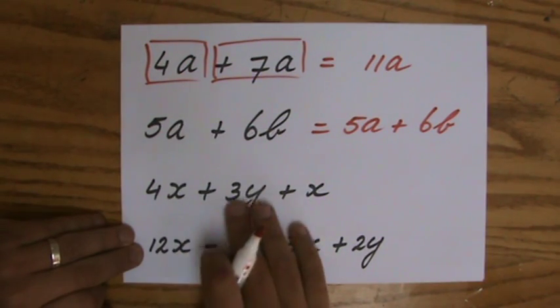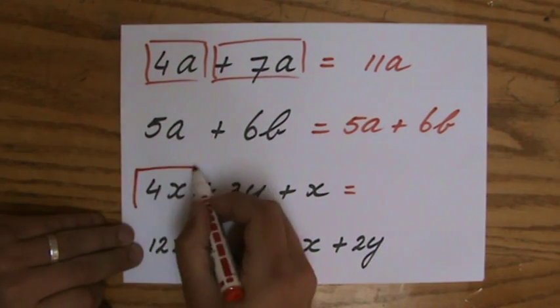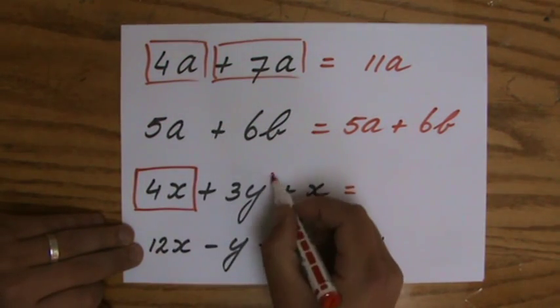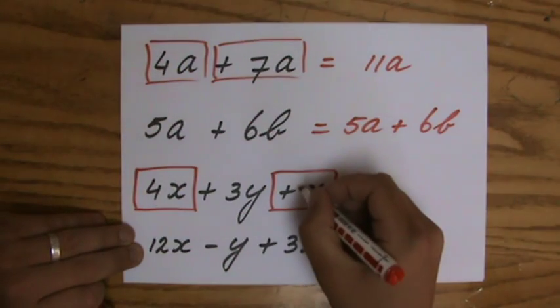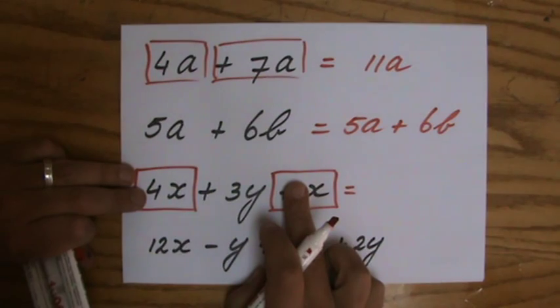4X plus 3Y plus X. Now I see some like terms again. I have a 4X, and I have plus X, and what is X at? X is 1X. So if you don't see the coefficient, it's always a 1.